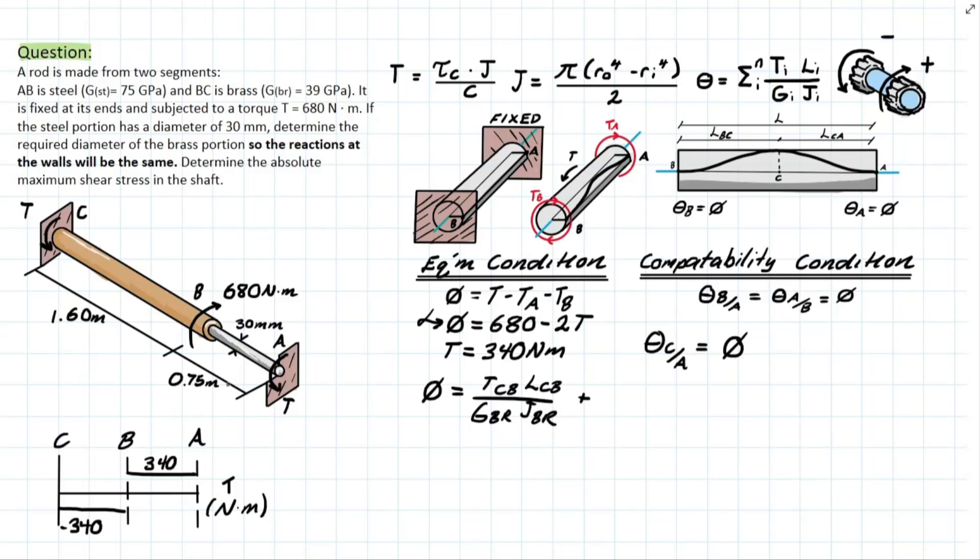And then we also have to consider the cumulative addition of this section BA where we have torque BA times the length BA over the shear modulus of the steel and the polar moment of inertia of the steel.